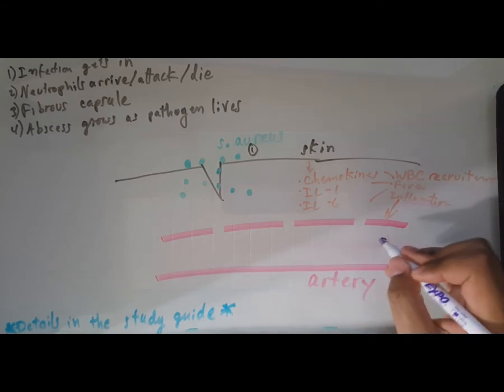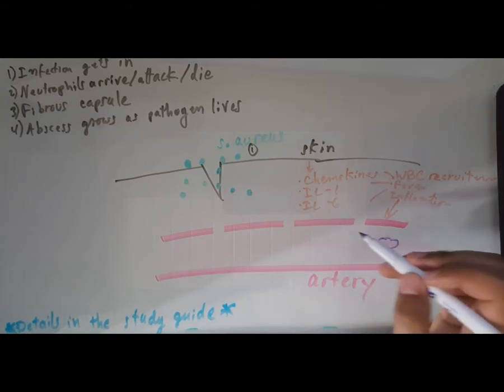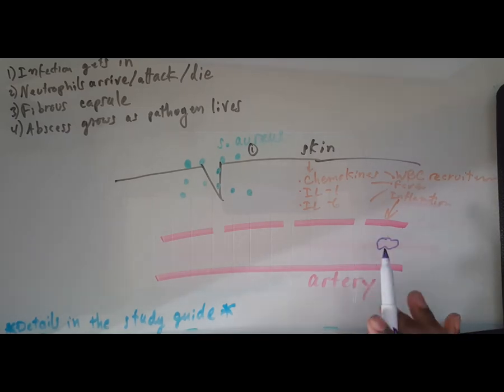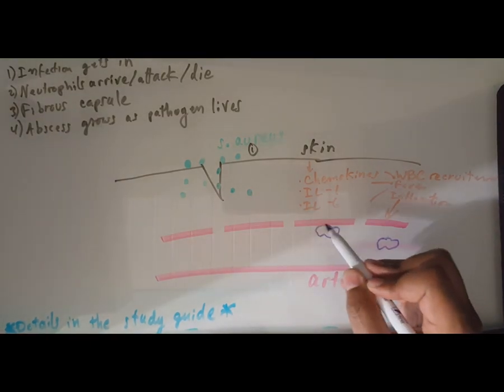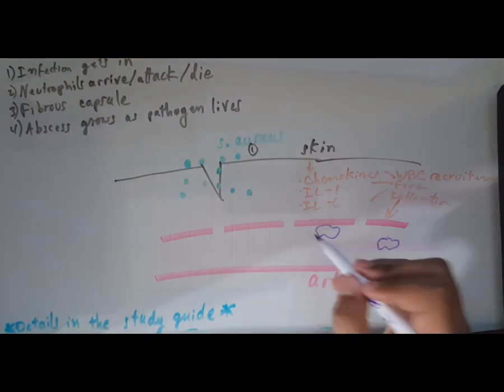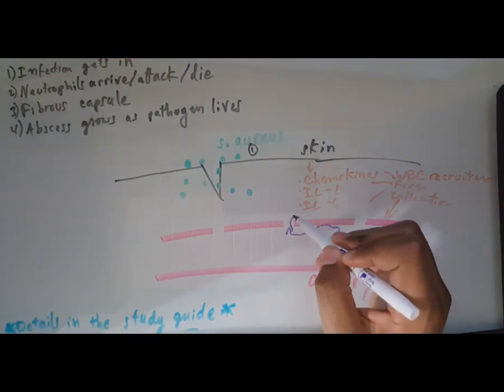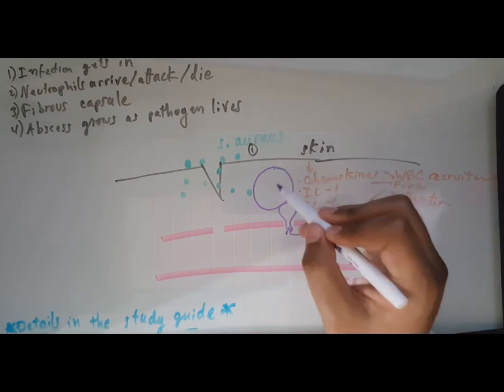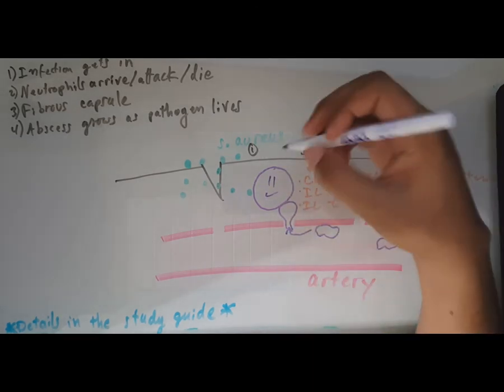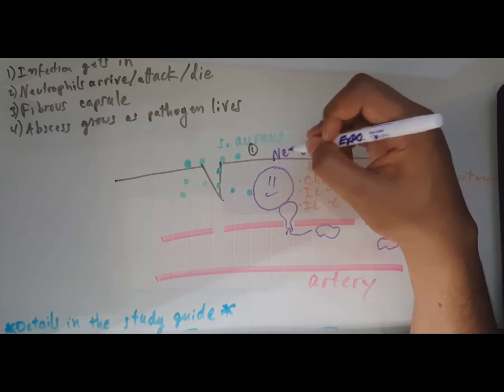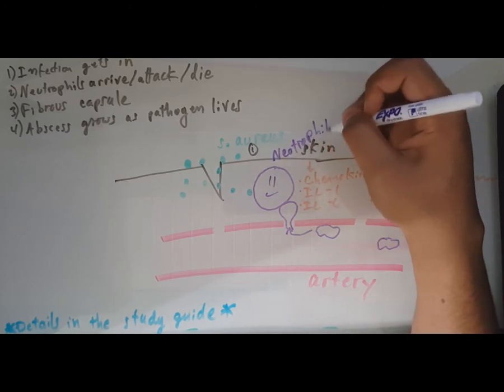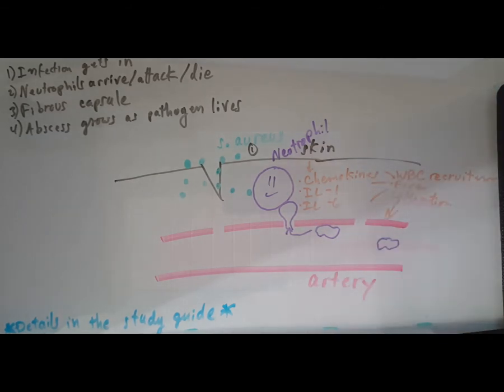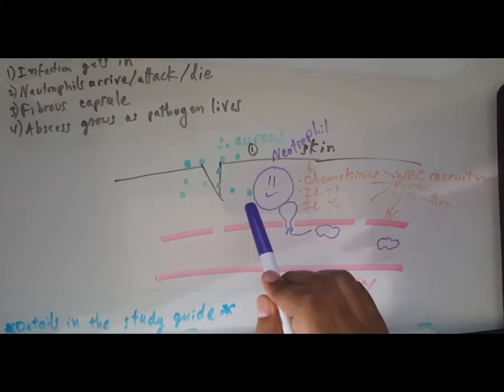Let's get a neutrophil in here. He's going to get chemotactic signals that call him over to the site of infection. They're going to adhere to the surface and move through, or diapedese through. We have a neutrophil here right next to the staph aureus.